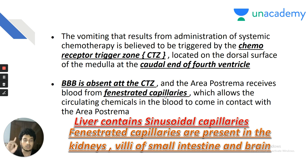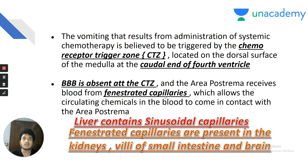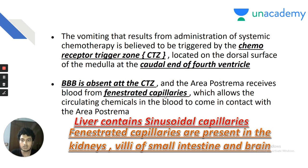Fenestrated capillaries in kidney, villi of small intestine and brain — this was a previous NEET question. Many confuse and think fenestrations are also in the liver, but no — in the liver the capillaries are sinusoidal, not fenestrated. Liver contains sinusoidal capillaries. Maximum permeability is shown by sinusoidal capillaries.